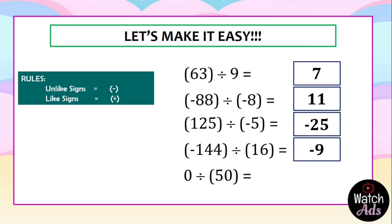For the final example: 0 divided by 50 is equal to 0 — any number divided into 0 is always 0. Also remember: any number divided by 0 is undefined.